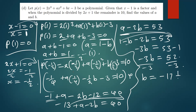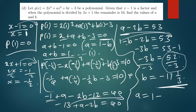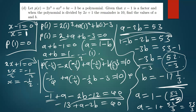So b = -52/3. To find a, substitute b back into a = 1 - b: a = 1 - (-52/3) = 1 + 52/3 = 55/3. So the values are a = 55/3 and b = -52/3. It's as simple as that.